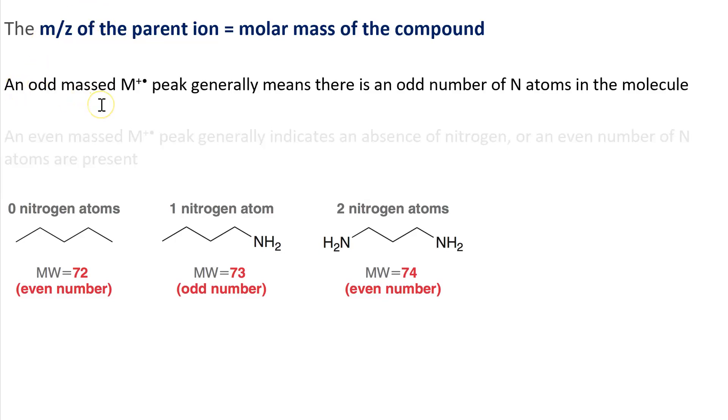Whether the parent ion is an even number or an odd number gives us information right off the bat. If it is an odd number, that usually means there's an odd number of nitrogen atoms in the molecule. If you have an even number from your molecular ion peak, that means either there's no nitrogen in the molecule or you have an even number of nitrogen atoms.